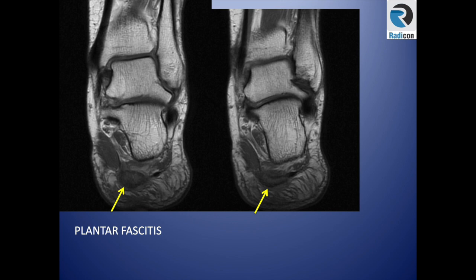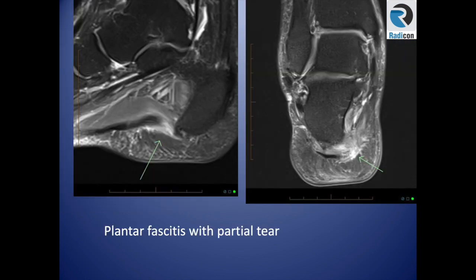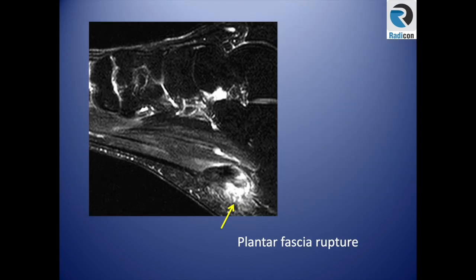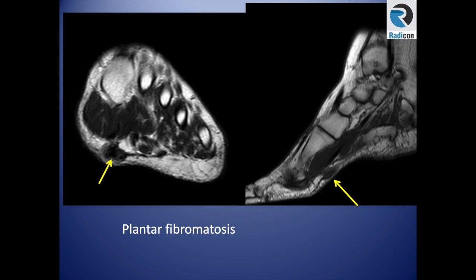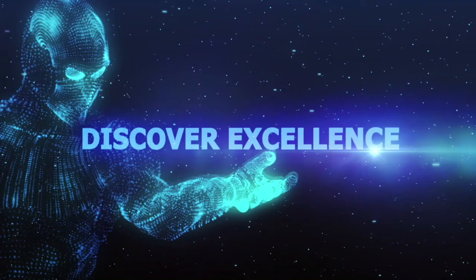Plantar fasciitis can be severe, with thickening exceeding one centimeter, and may present with partial or complete tear from the calcaneal attachment with some retraction. Focal thickening seen more at the mid or forefoot level within the plantar fascia indicates plantar fibromatosis.